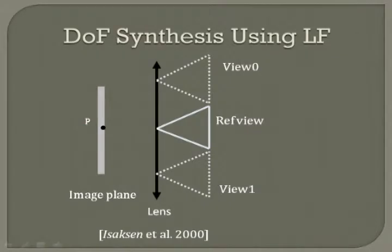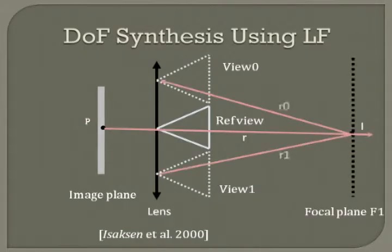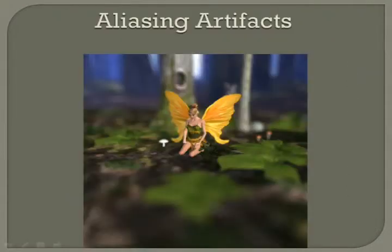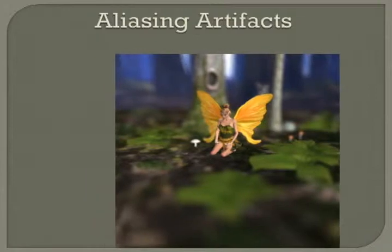To synthesize depth of field, we apply classical light field rendering by fusing multiple rays. We normally render a light field of 32 to 48 cameras due to speed concerns.